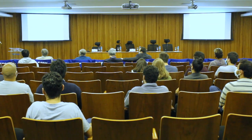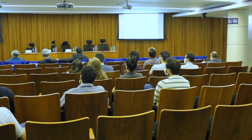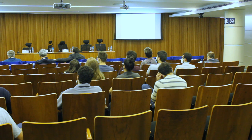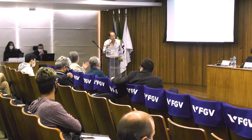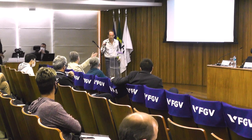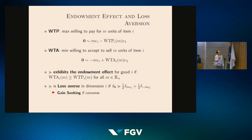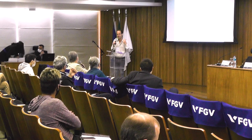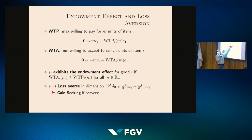Loss aversion: we say the individual is loss averse in dimension i if they prefer getting zero for sure over participating in the 50-50 lottery that gives +M or −M in dimension i, for any M. There is a question: one thing we are interested in is the endowment effect, which is about trade-offs between money and goods. This is something that couldn't be discussed even in the prior paper. The multi-dimensional setup also allows for cross-good trade-offs.